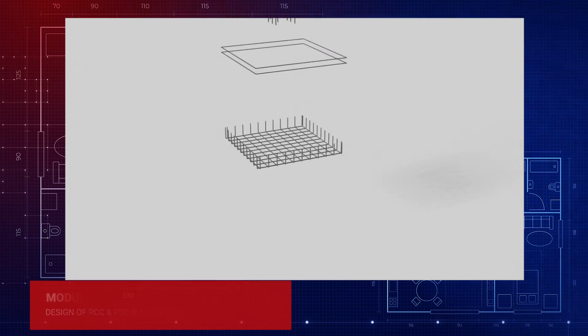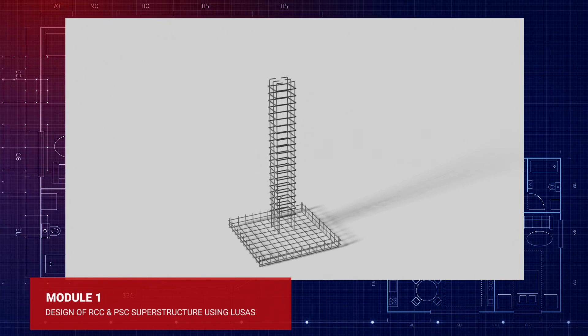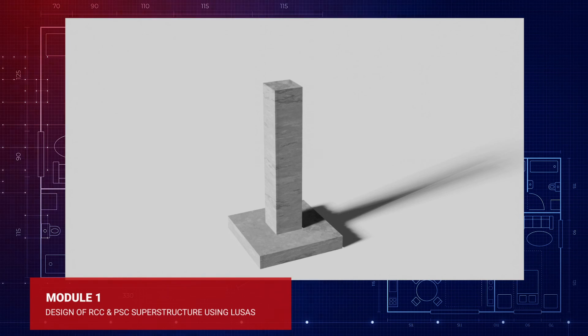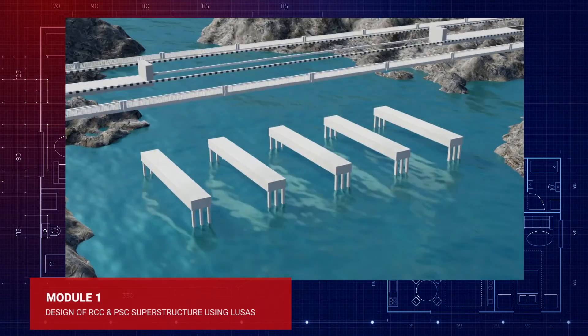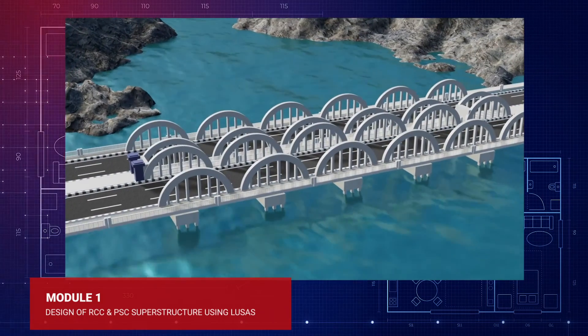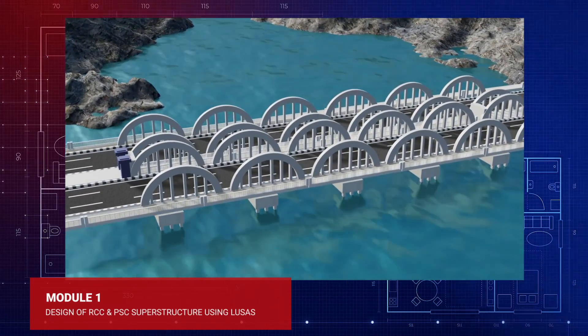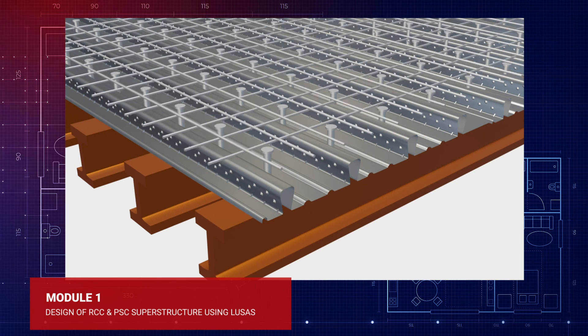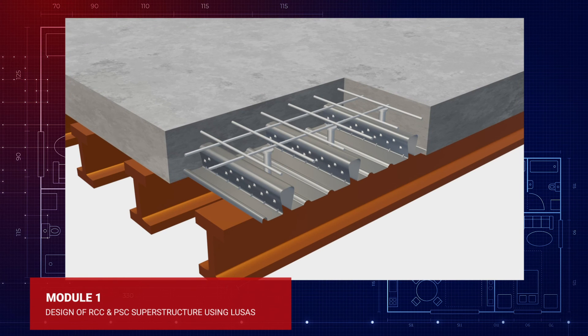This course has six modules. Module 1 covers the design of reinforced cement concrete and pre-stressed concrete bridge structures like slabs, decks and girders. It also covers steel concrete composite designs and various analysis methods.